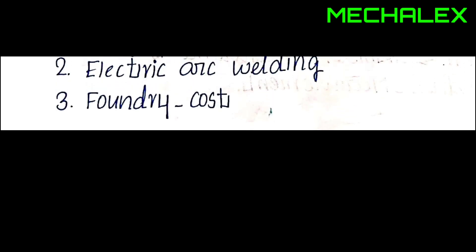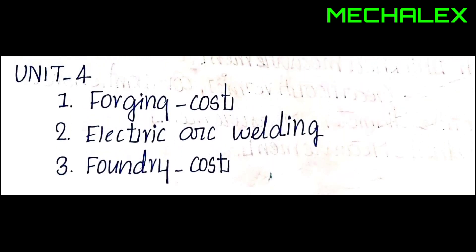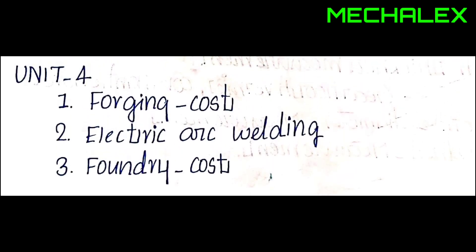The numerical problems cover: first, forging — forging material and casting; second, electric arc welding; third, foundry. There will be cost calculations for each. There will be some major problems here.